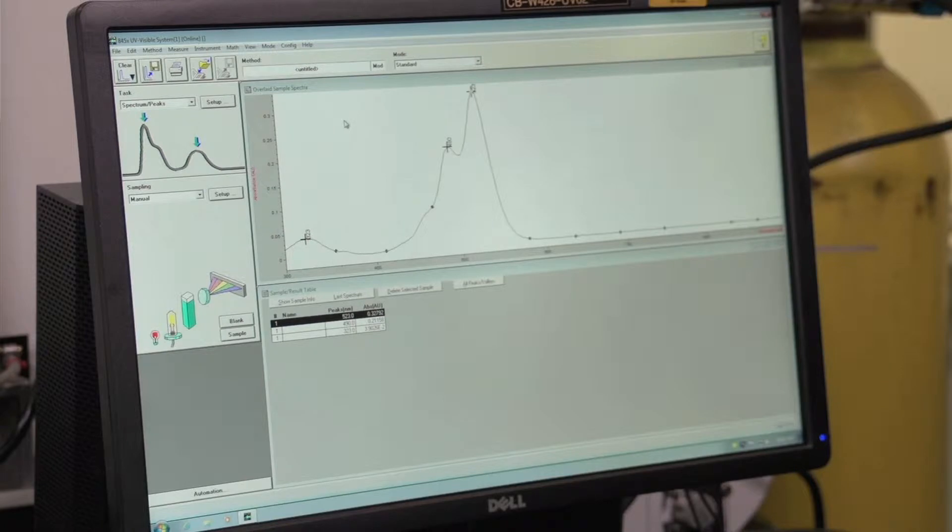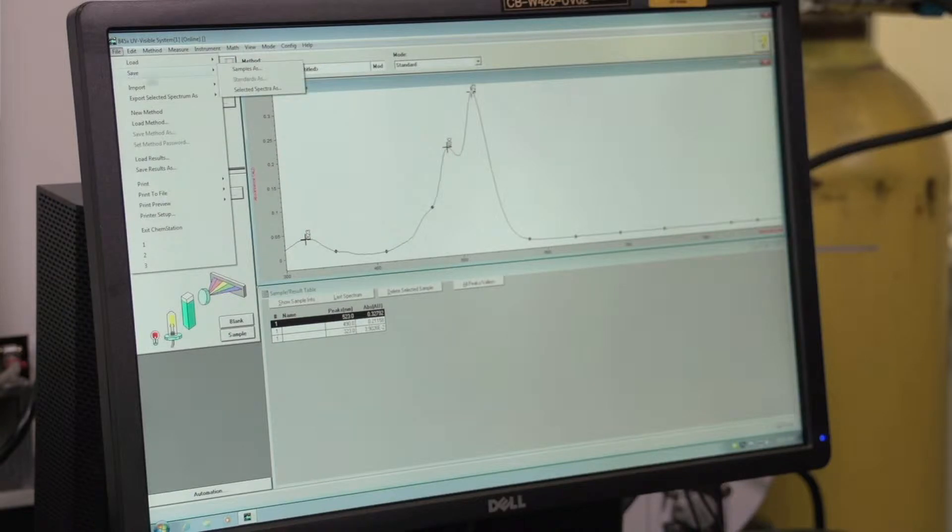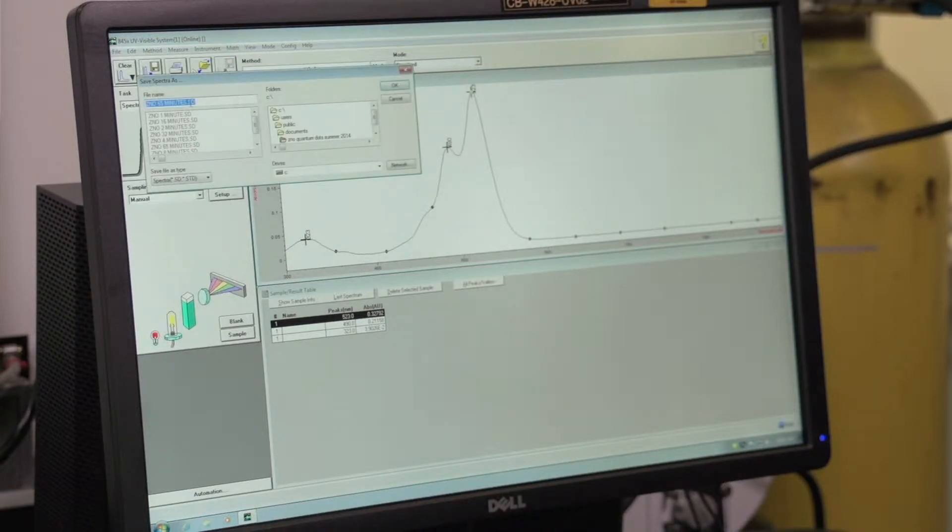Now that we've collected our spectrum, you'll want to save the spectrum. Click it to make sure it's highlighted. It'll have these diamonds to know that it's highlighted. Then save it by going to File, Save, Save Sample As, and then give it a title that is your name and the date and the sample. You'll want to save it in the public folder. So it'll be in the C drive, then Users, Public, Public Documents, and then a folder that has your name and the date.